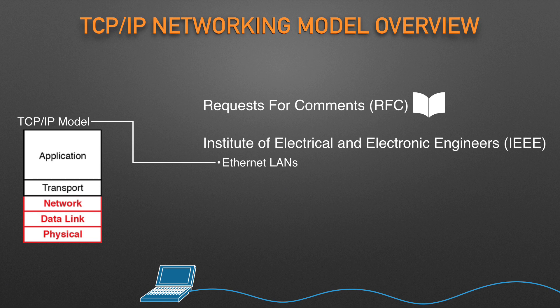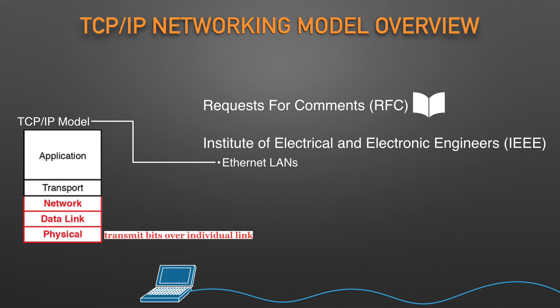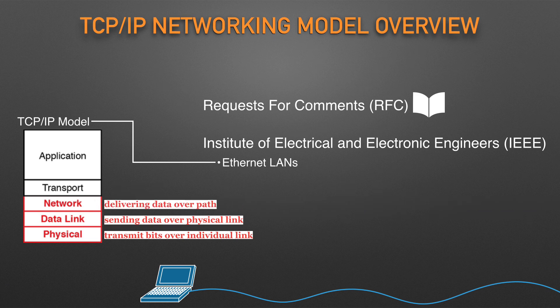The TCP/IP model shows the more common terms and layers used when people talk about TCP/IP today. The bottom layer focuses on how to transmit bits over each individual link. The data link layer focuses on sending data over one type of physical link — for instance, networks use different data link protocols for Ethernet LANs versus wireless LANs. The network layer focuses on delivering data over the entire path from the original sending computer to the final destination computer. And the top two layers focus more on the applications that need to send and receive data.